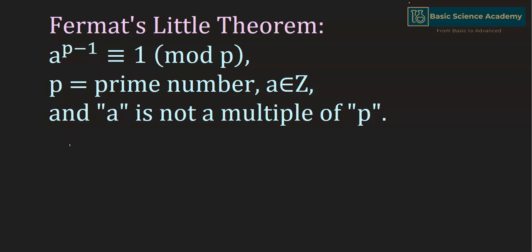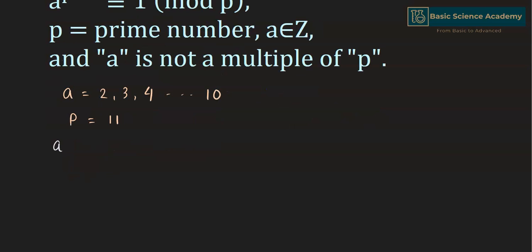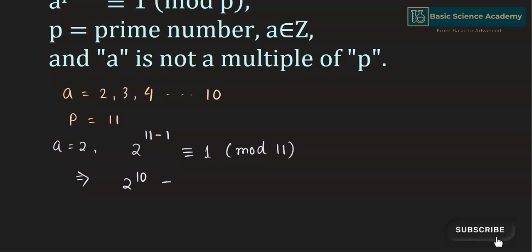Here we have a equals 2, 3, 4 up to 10 and p equals 11. When a equals 2, we have 2 to the power of 11 minus 1 is congruent to 1 mod 11, which we can write as 2 to the power of 10 is congruent to 1 mod 11.